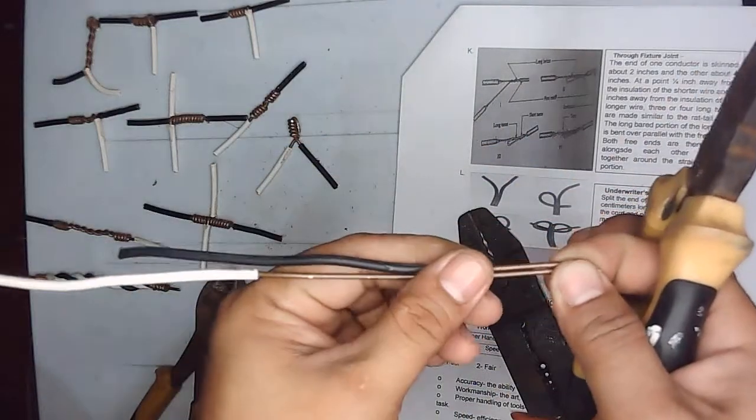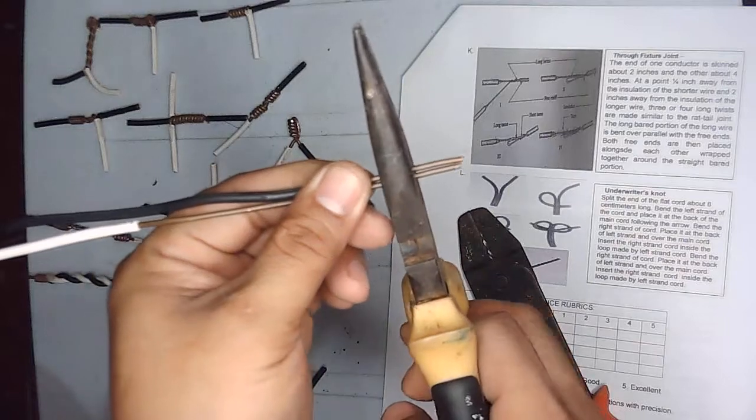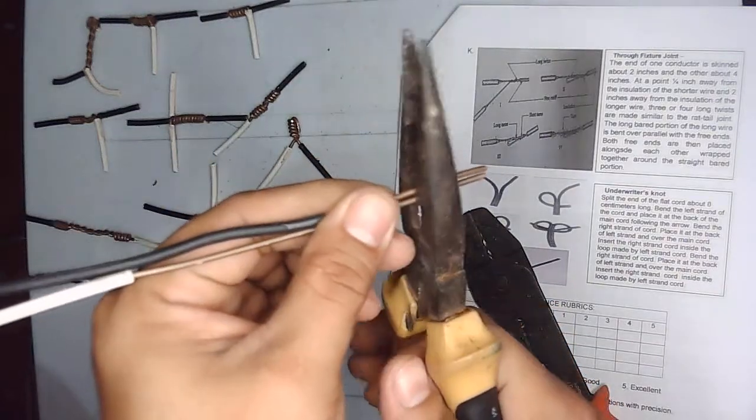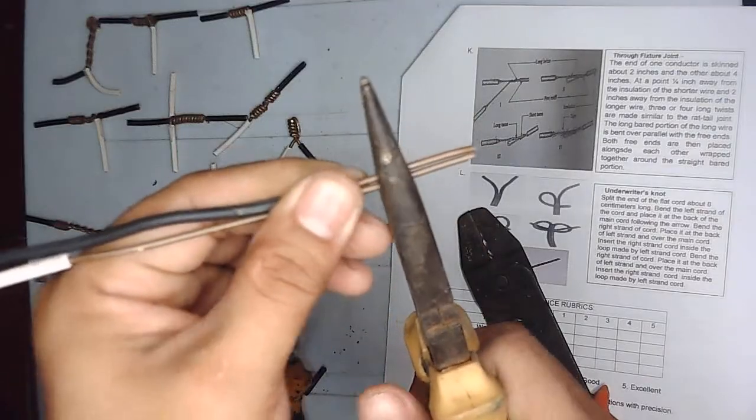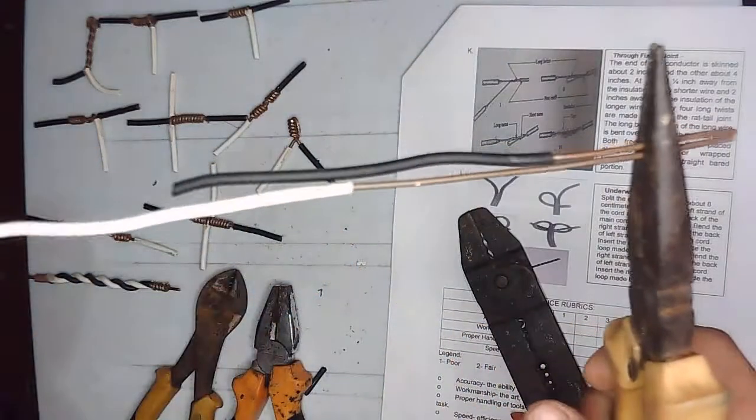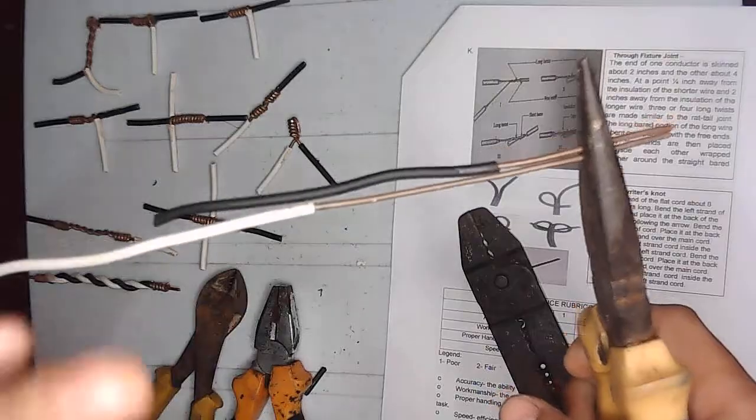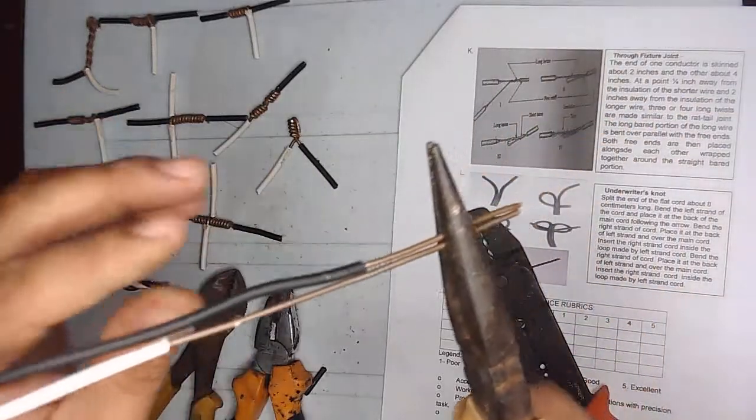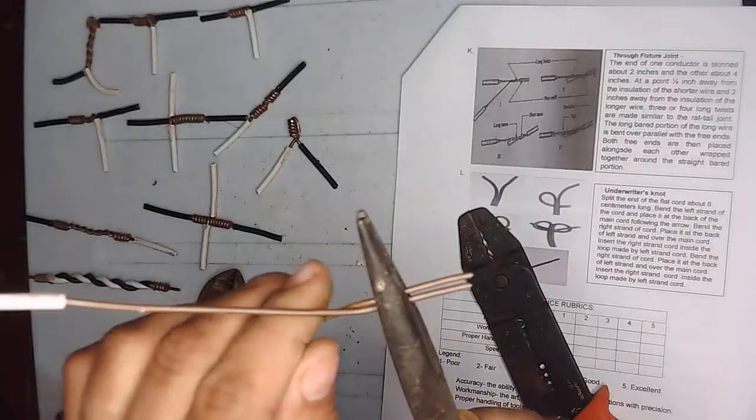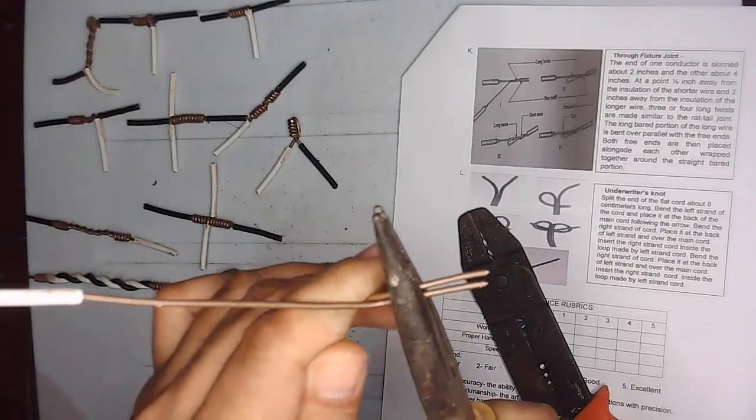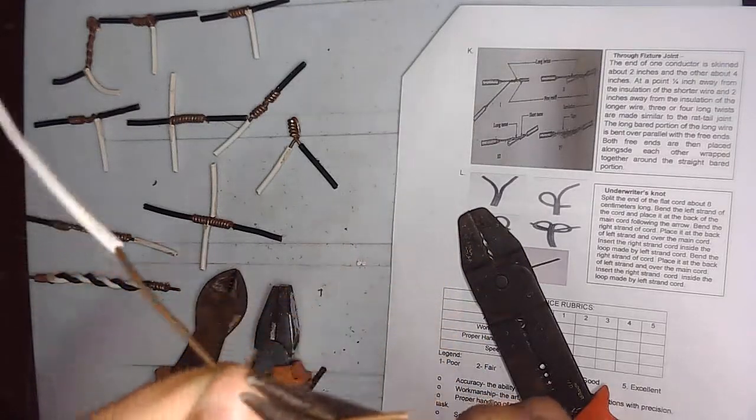Then afterwards we just hold that one using the long nose pliers about one inch at the center. We use long nose pliers to hold, then afterward we will just twist, same as the rat tail.